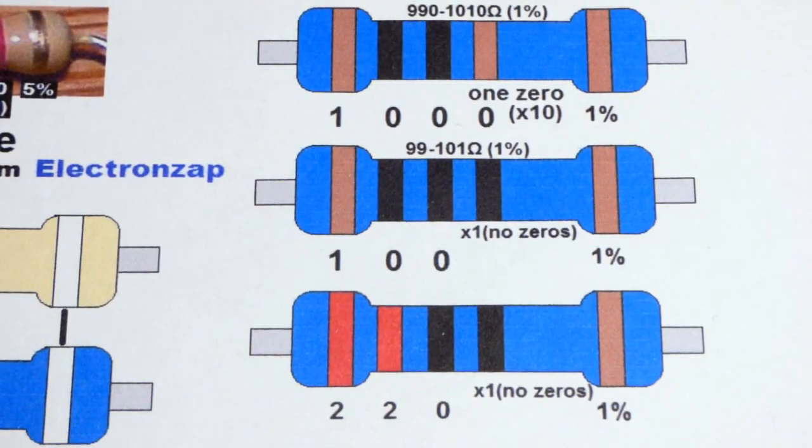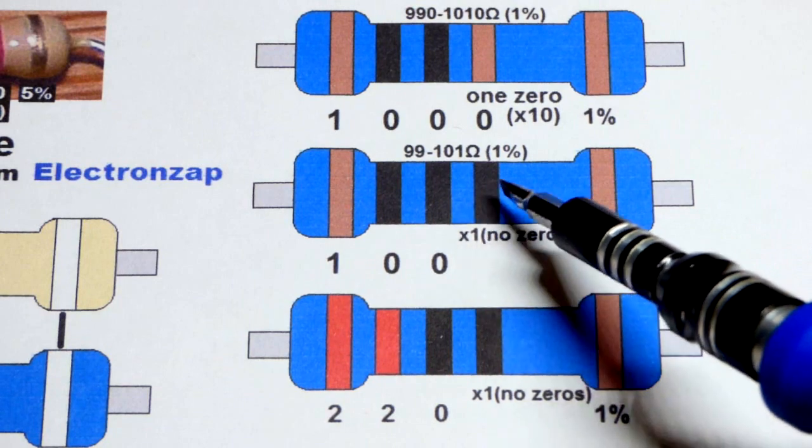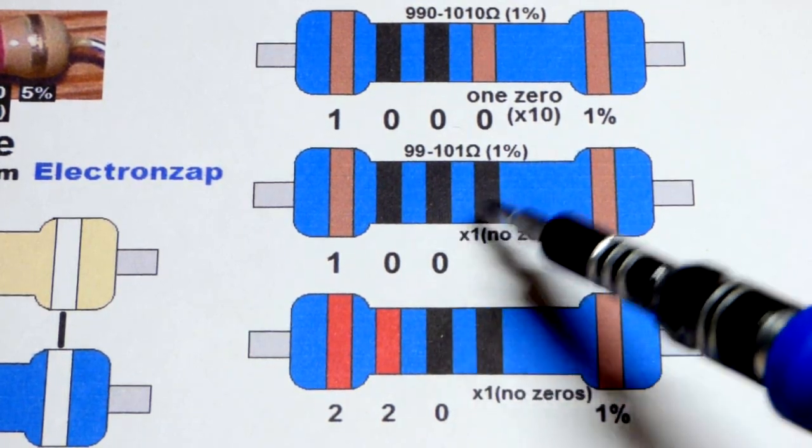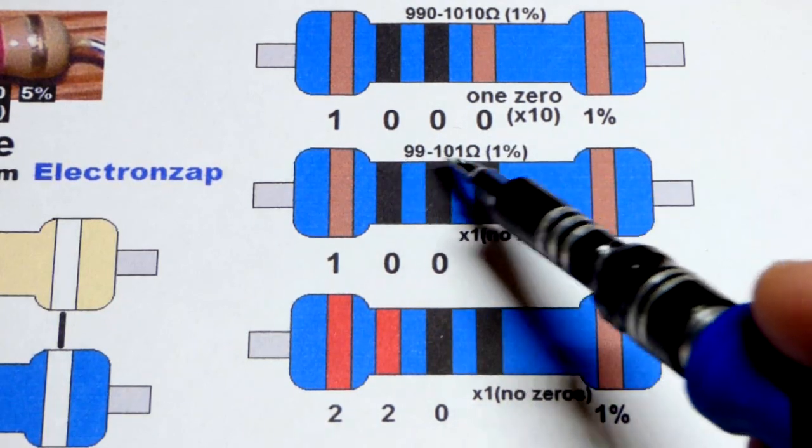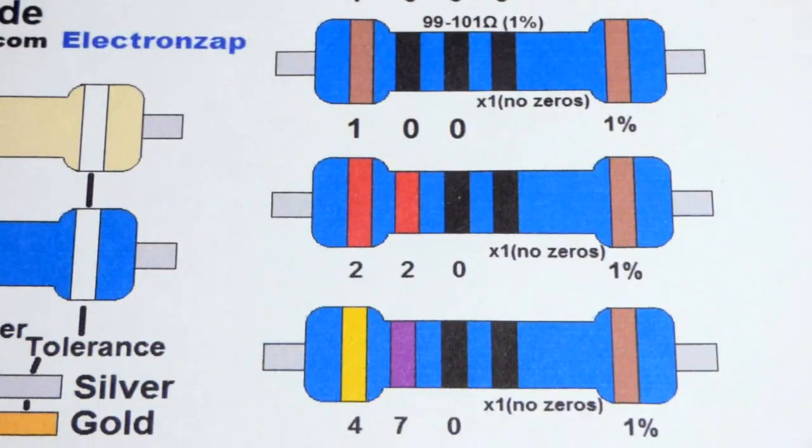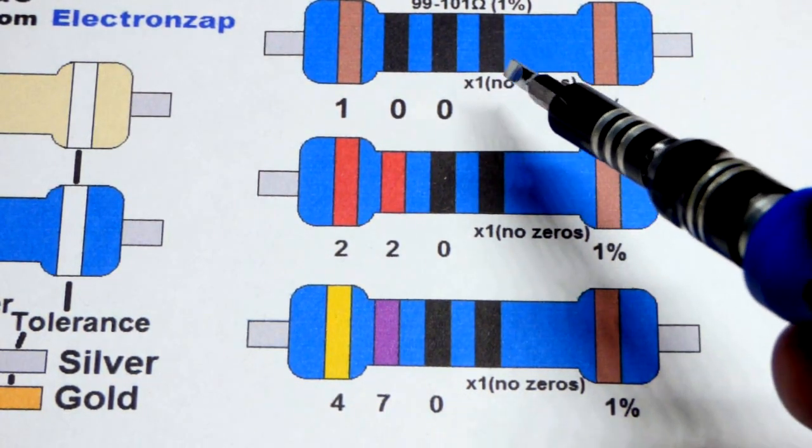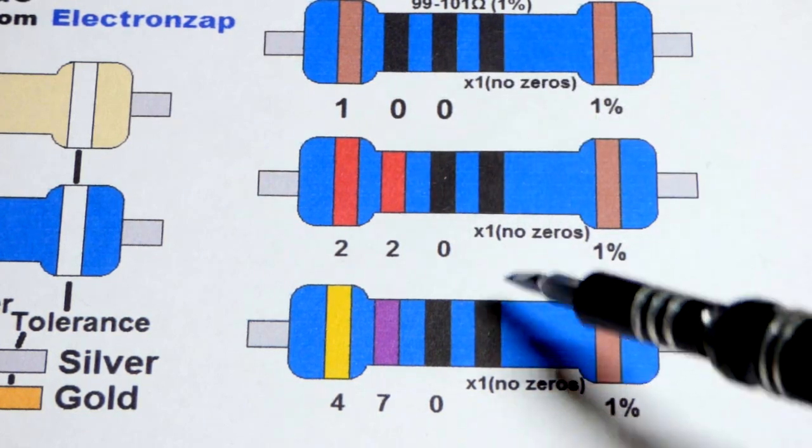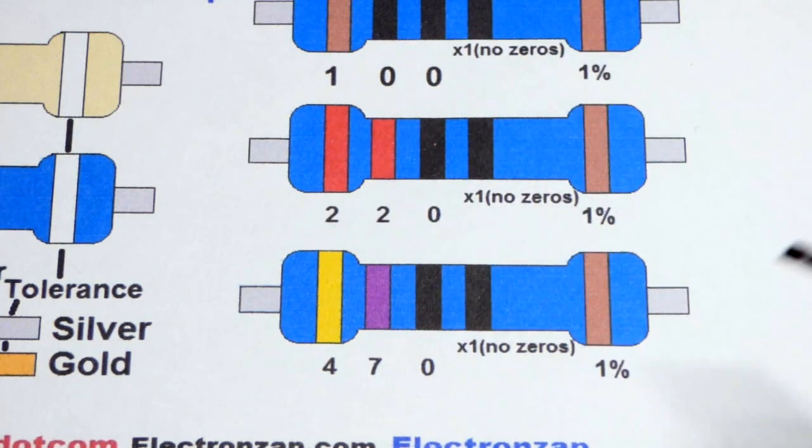Now 100 ohms, same thing except for the multiplier is black. And so that's 0 zeros or times 1 according to some tables. So 1% tolerance, it'll probably be 99 to 101, somewhere in that range. I do have cheap resistors where it falls out of the range a little bit, but the worst ones were like 2% off or something. It's usually still close to 1%. Really makes no difference for basic circuits unless you have a real precision circuit.